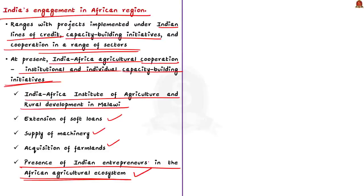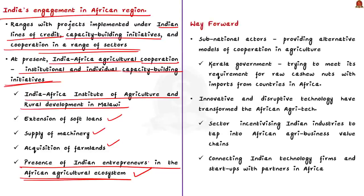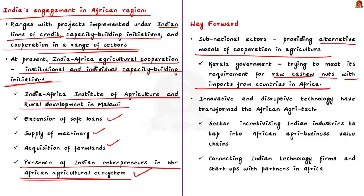But the question is: are these measures sufficient enough to build a development partnership with Africa? The answer is a clear no. Sub-national actors are providing alternative models of cooperation in agriculture. For instance, the Kerala government is trying to meet its requirements for raw cashew nuts with imports from African countries. There are also proposals to create a jointly owned brand of 'Africa-Kollam cashews.' Similar ideas could encourage state governments and civil society organisations to identify opportunities and invest directly.